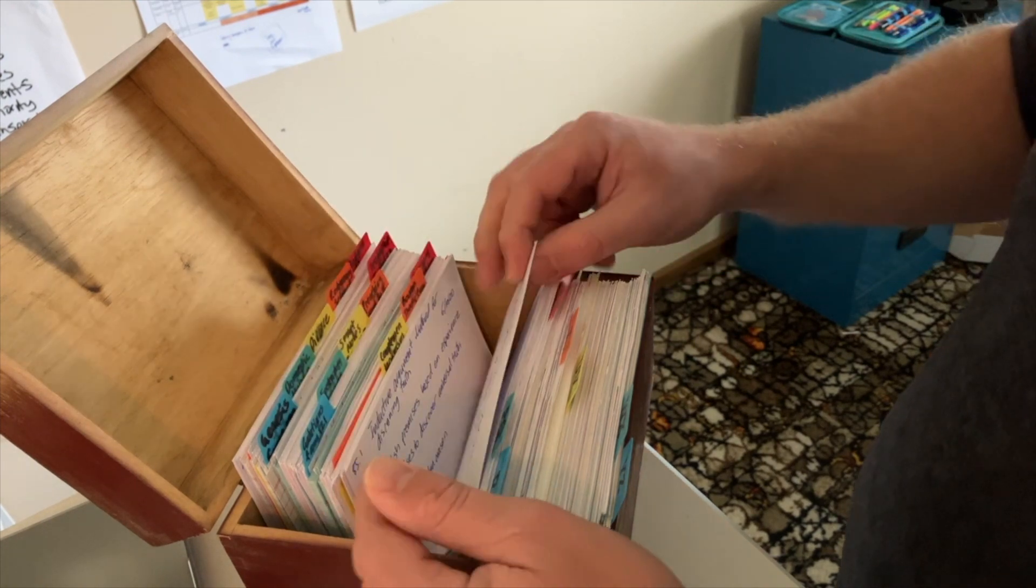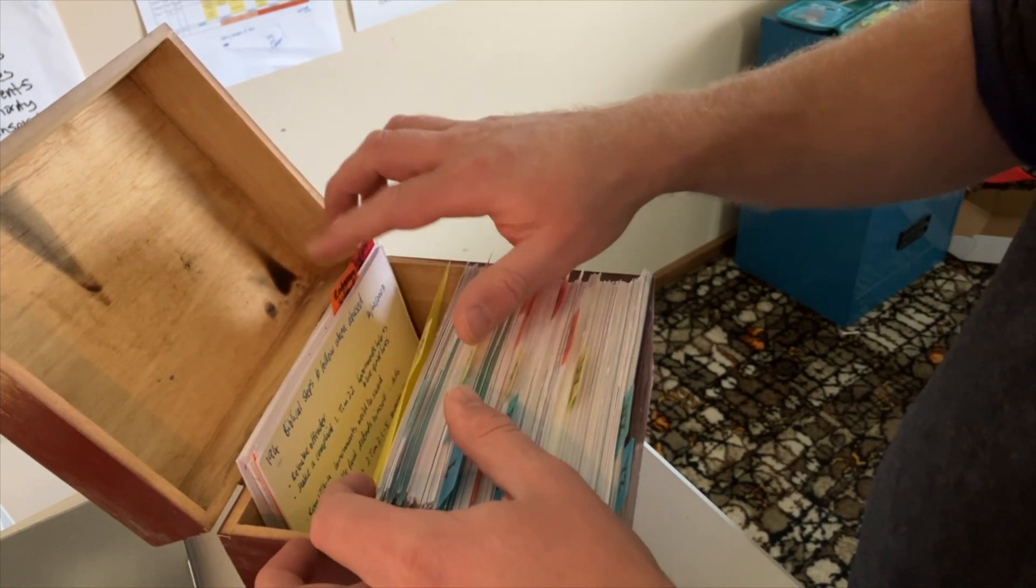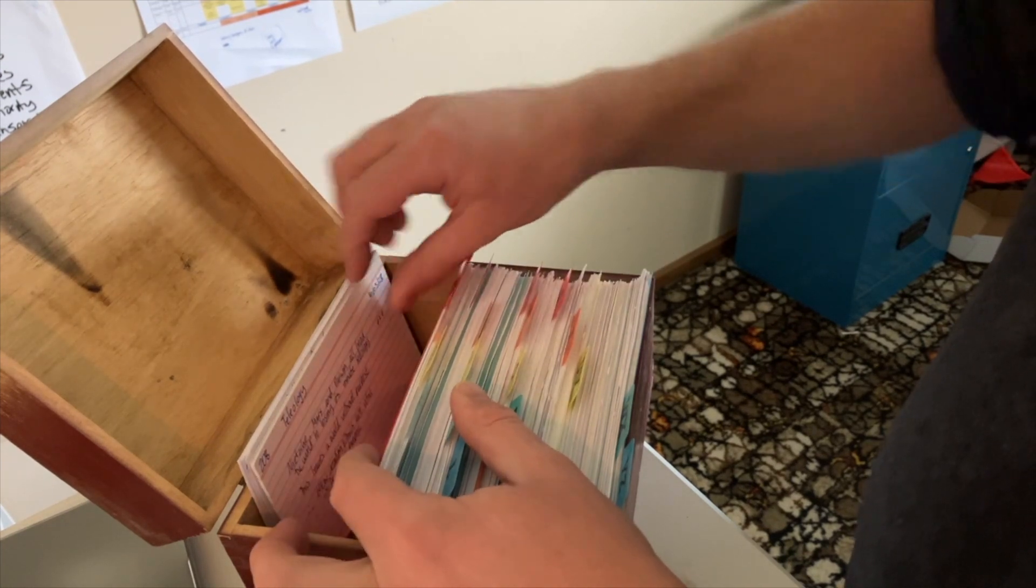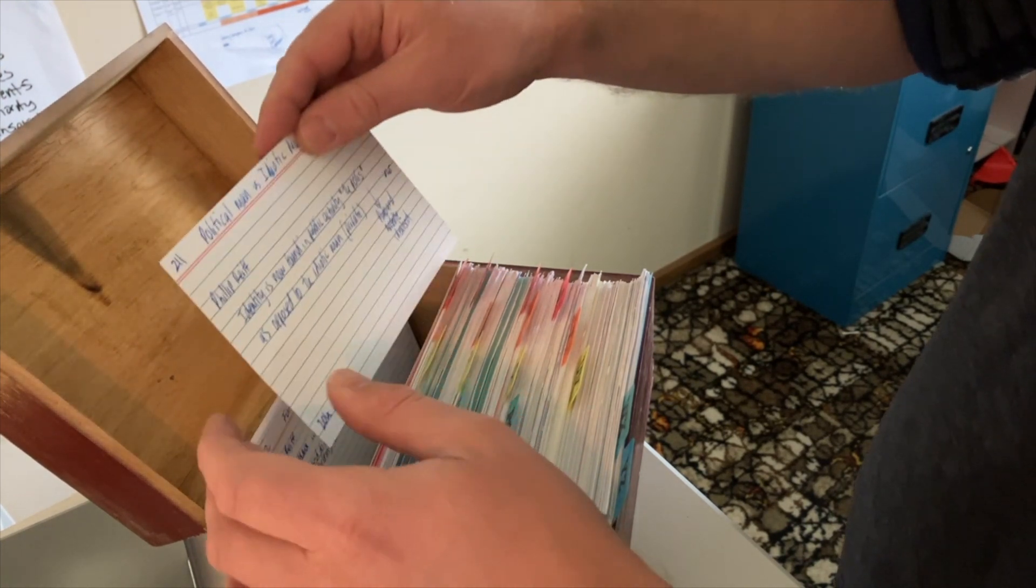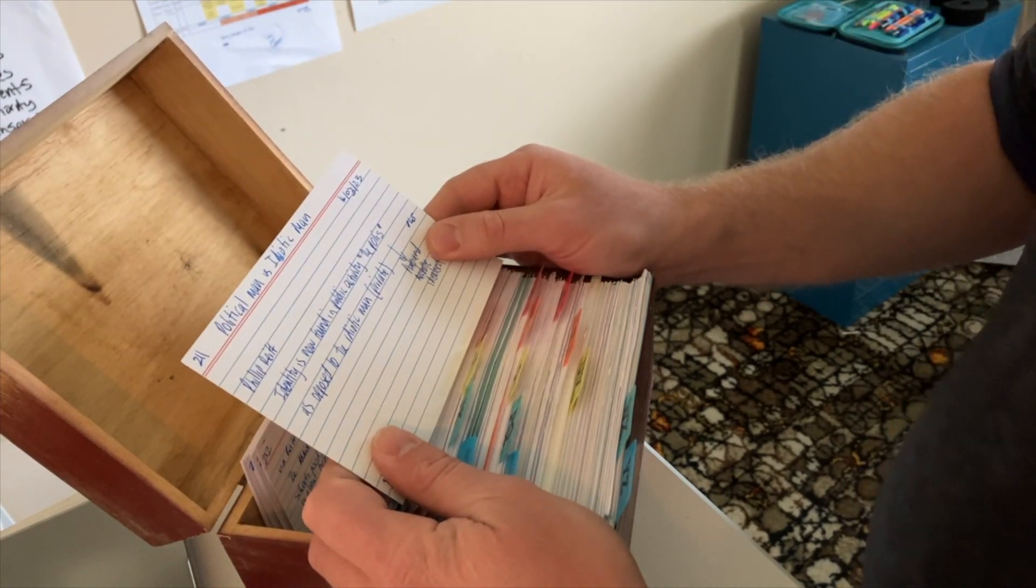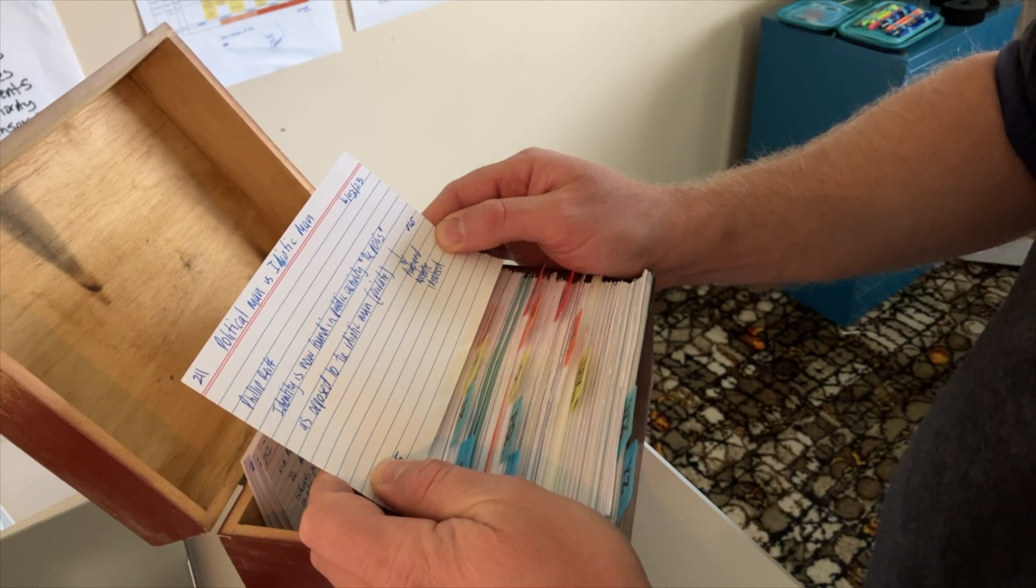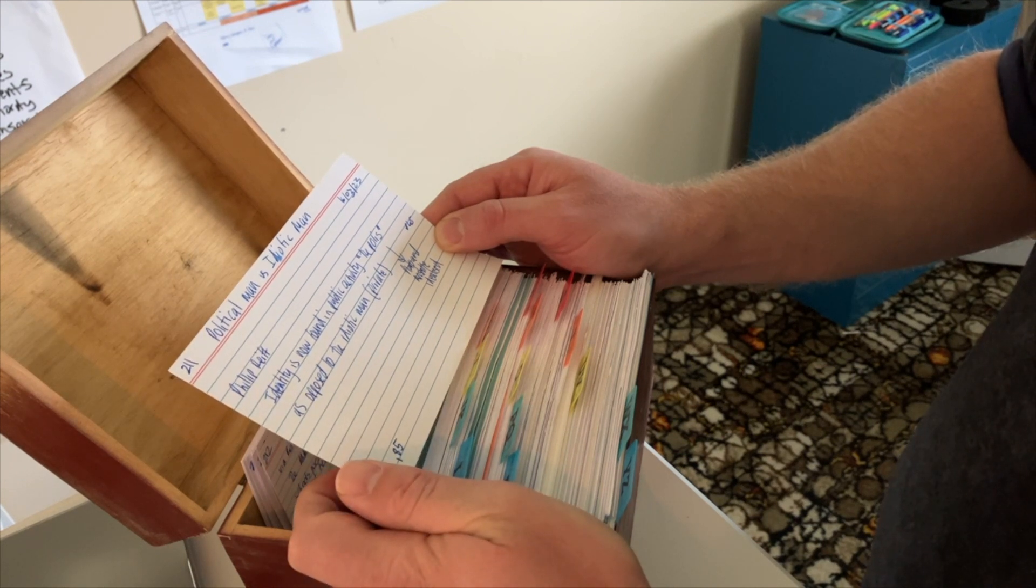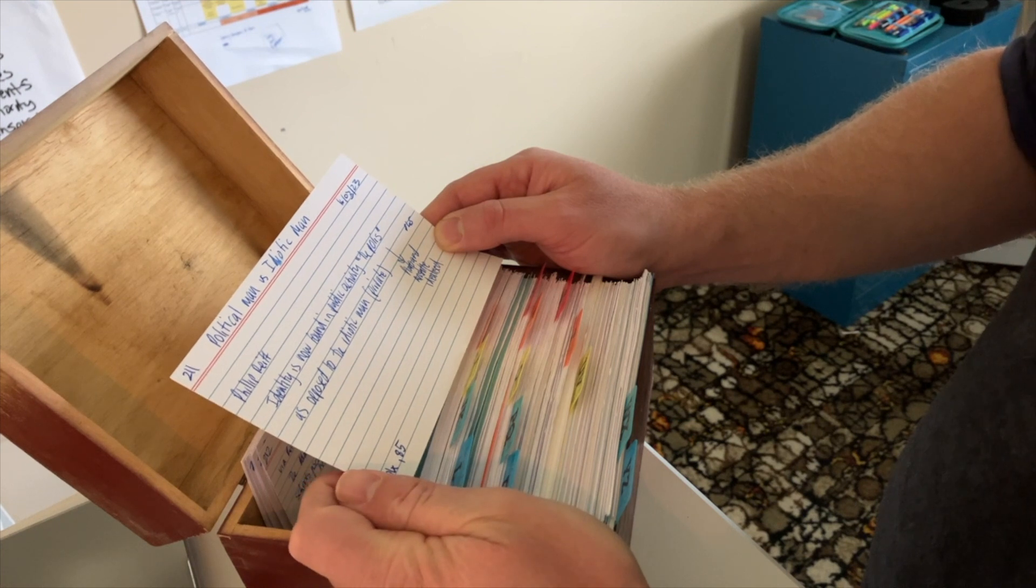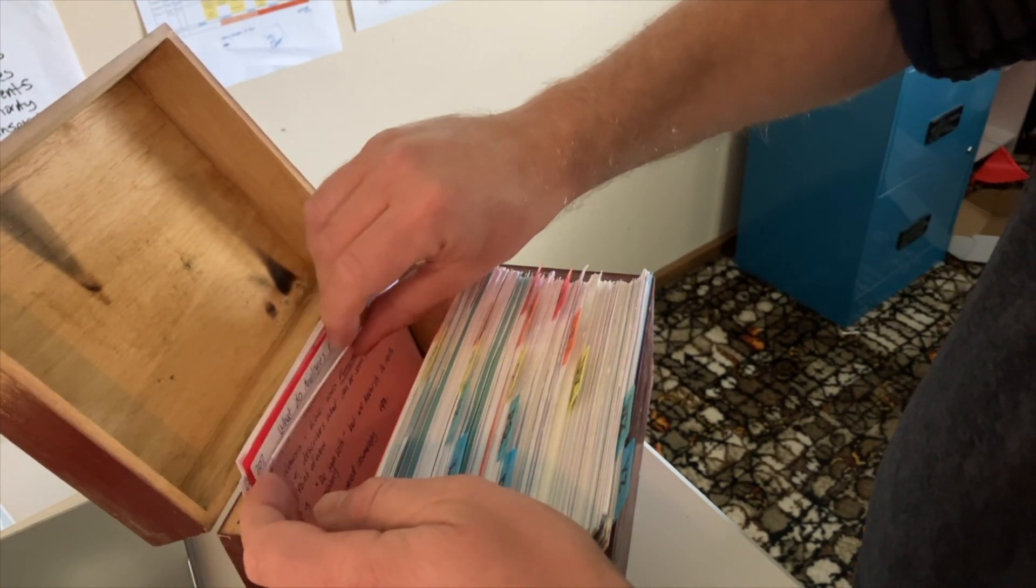That one links to 211. I was reading The Rise and Triumph of the Modern Self by Carl Truman. He's talked about the political man versus the idiotic man. So he's quoting Philip Rieff. Identity is now found in public activity, the polis, which is Plato and Aristotle idealized, as opposed to the idiotic man, which means the private man. That's interesting what I've got there, just thinking through stuff and making connections in my reading. That one links to 204.